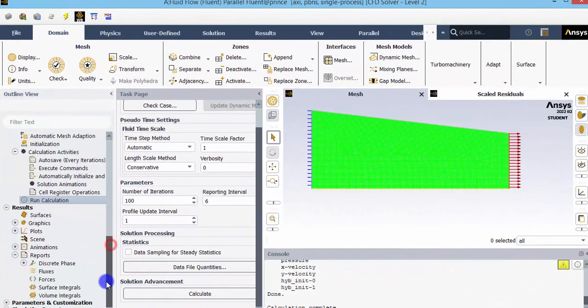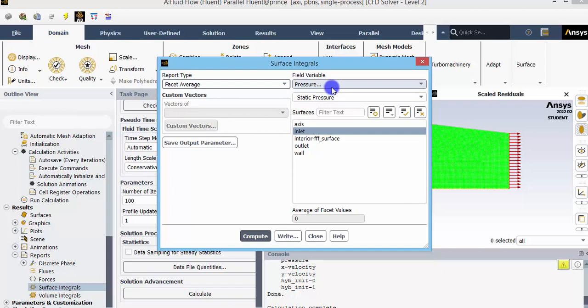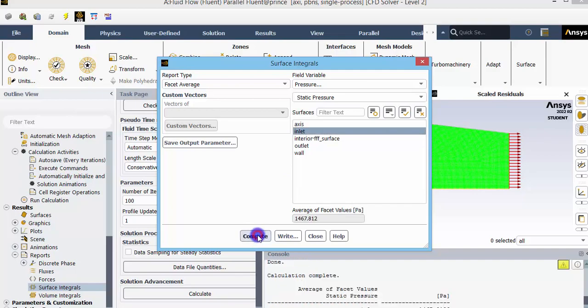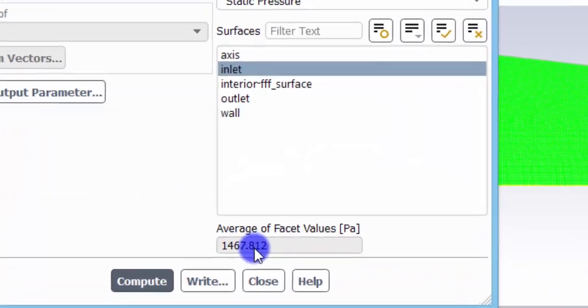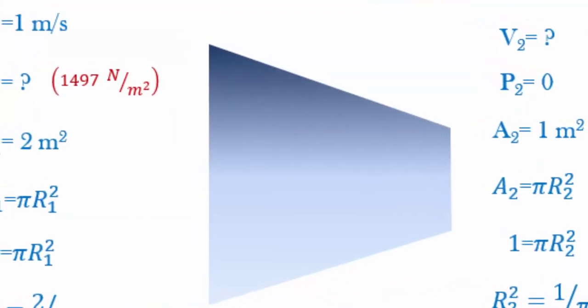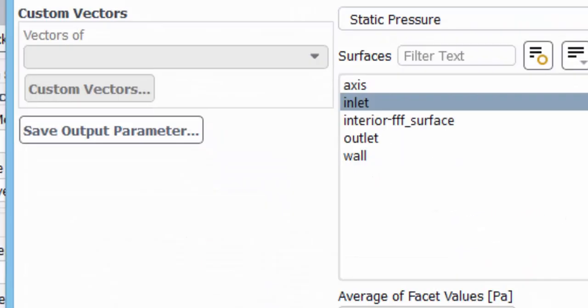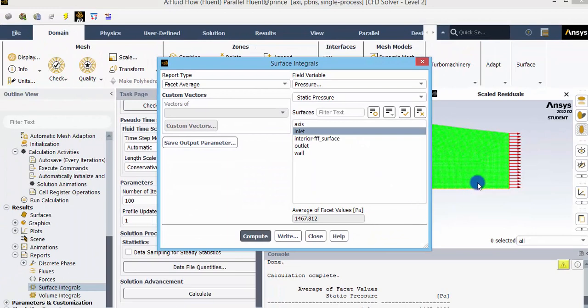go to the reports, variables and click surface integrals and select facet average pressure here and select the boundary at the inlet. As we have calculated theoretically, the pressure value here computed is 1467 pascals. The result what we had from the theoretical Bernoulli's model is 1497 pascals. Almost they are the same. There is a small error. That may be because of the mesh generation. Since that is numerical calculation, there will be some small deviation.